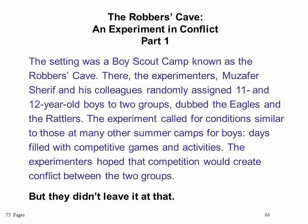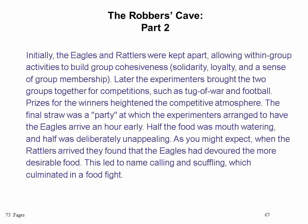In the Robbers Cave Experiment, the researchers attempted to create a situation where two different groups of people hated each other and had aggressive tendencies toward each other, and then purposely tried to repair the rift they had created. The setting was a Boy Scout camp in an area called Robbers Cave. Experimenters Muzaffer Sharif and colleagues assigned 11- and 12-year-old boys to two groups dubbed the Eagles and the Rattlers. The experiment called for conditions similar to many other summer camps — days filled with competitive games and activities — and the experimenters hoped that competition would create conflict between the two groups.